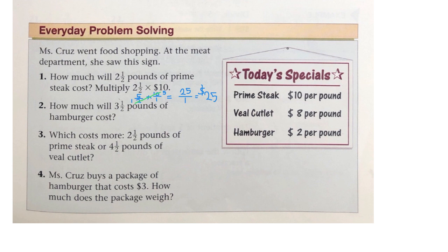How much will 3 and a half pounds of hamburger cost? So here's a very similar problem. So we have 3 whole and a half times, so it's the hamburger, 2 pounds. Or $2 per pound. So we put 2 over 1. Now we can change the 3 and a half.